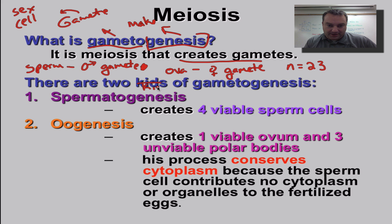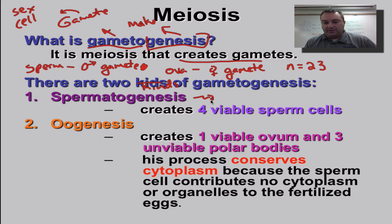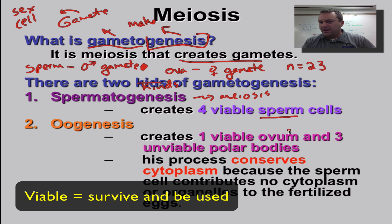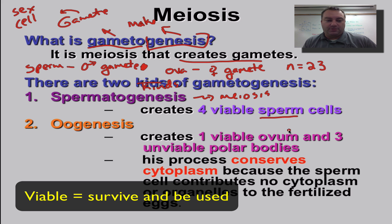Spermatogenesis is going to make sperm cells. This is basically regular old meiosis, except your daughter cells are going to be sperm cells. Nothing really different happens in this one — it's exactly what you learned in the last episode. But when it comes to oogenesis — pronounced 'o-a,' not 'oo' — when you're making egg cells, you're only going to get one of them.